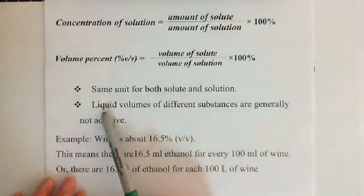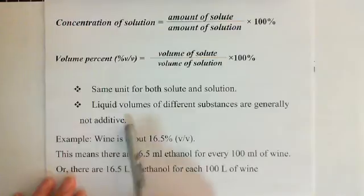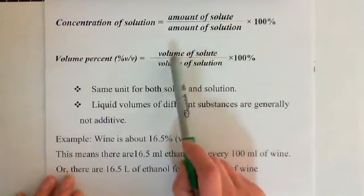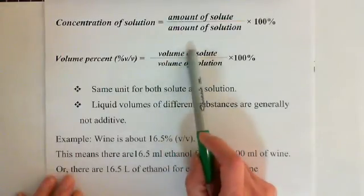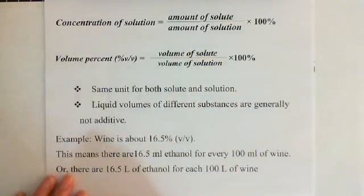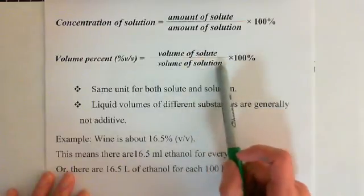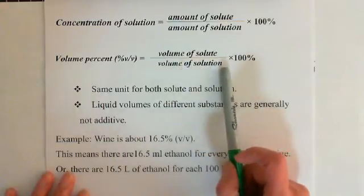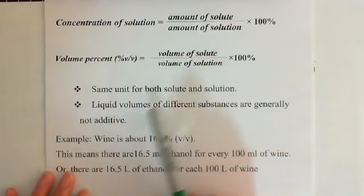You need to be very careful because liquid volumes of different substances are generally not additive. That means when we are using volume percent, the solute is a liquid. So both are measured as liquid. Because if you have 50 milliliters of solute plus 50 milliliters of solvent, you will not precisely get 100 milliliters of solution — always less. So that's why different substances and liquid volume is not additive.